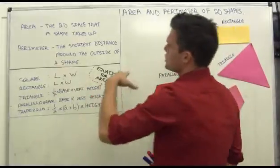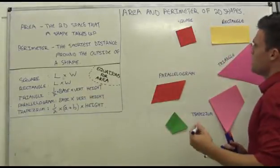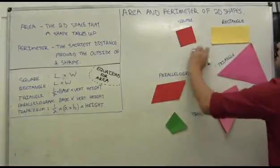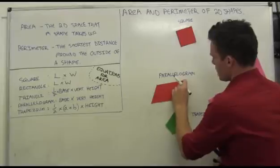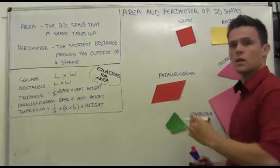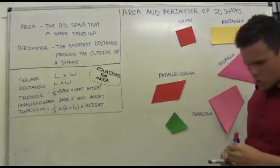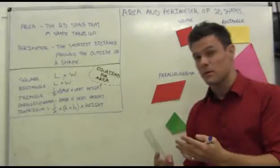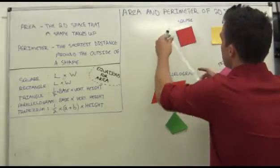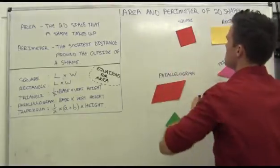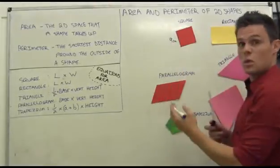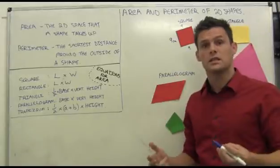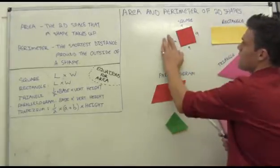The perimeter is the shortest distance around the outside of a shape. That means you map your distance travelled to the outline of the shape. You'll either be required to measure, or you'll be given the actual measurements, or you'll be given some and have to work out others. Let's say we have to measure this — that tells me it's 9cm. I know that this is a square, so all the sides are 9cm. 9 plus 9 plus 9 plus 9 — very easy — 9 times 4 is 36.